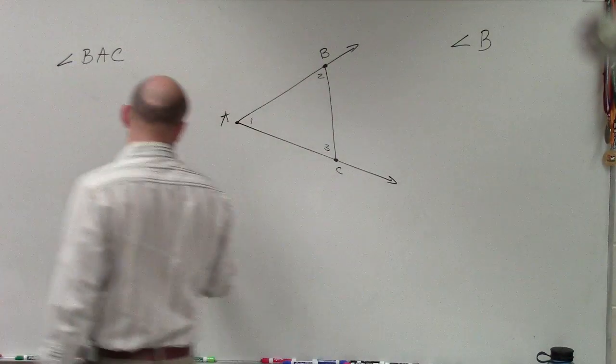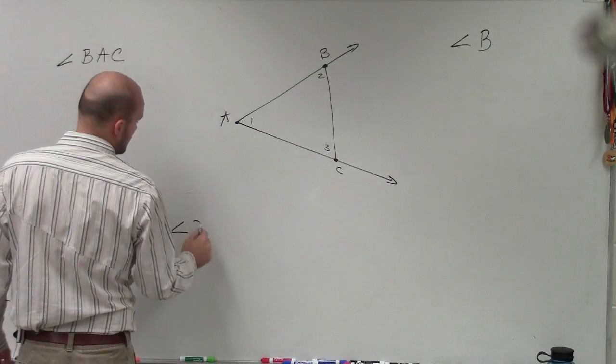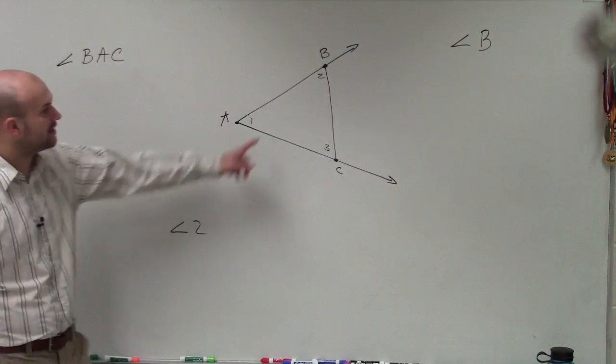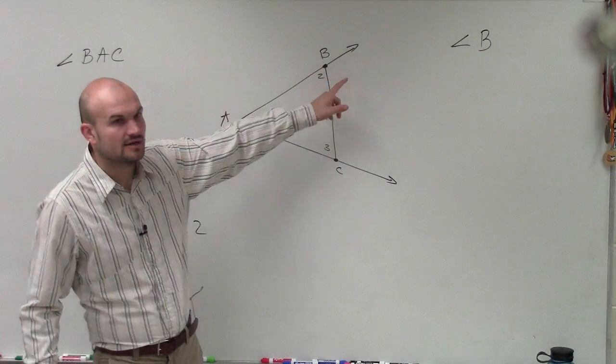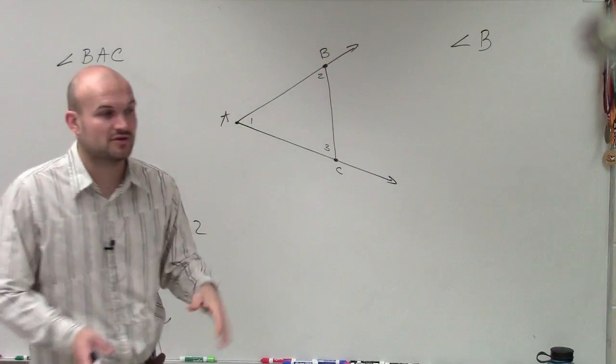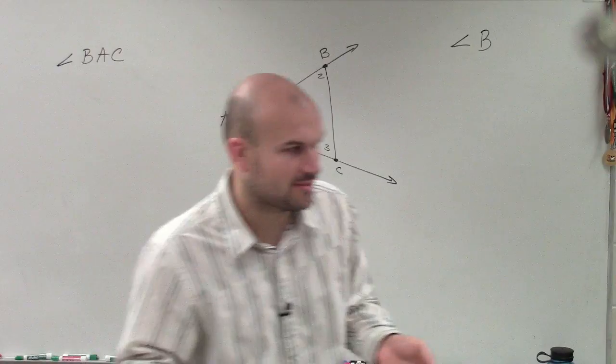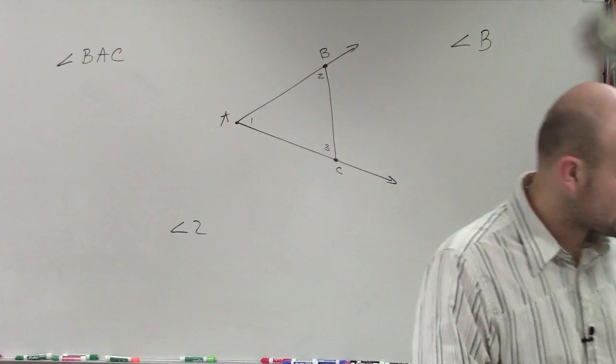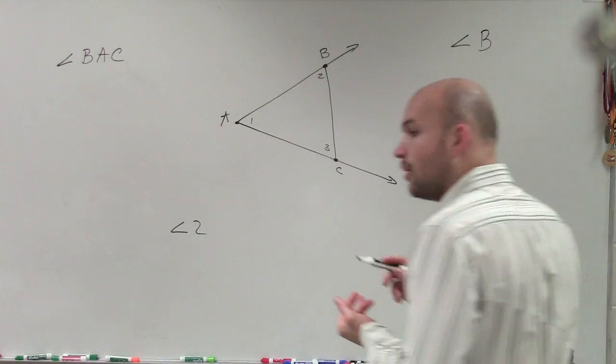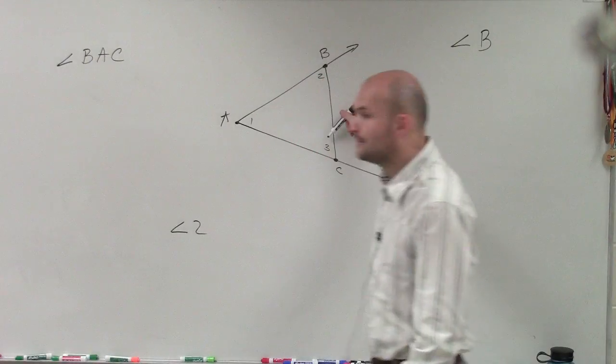And then the last one is we can also use an angle with a number or a letter inside. So there's three different ways we can label angles. We always have to have that little angle mark. Then we can either use the vertex, three points, or a label inside.